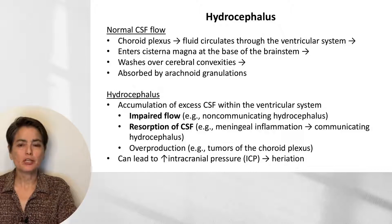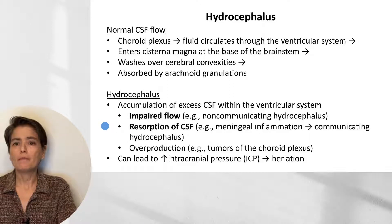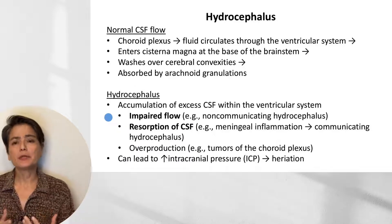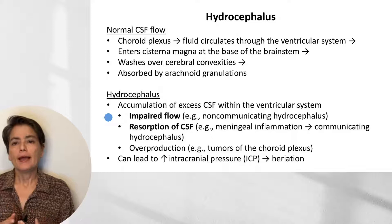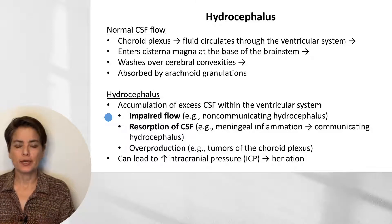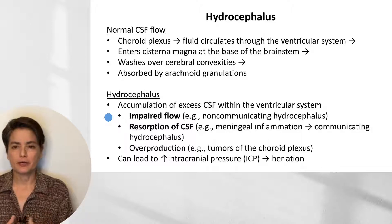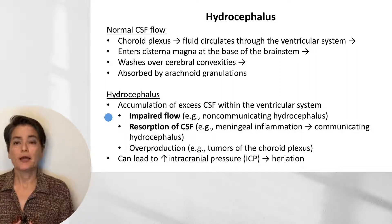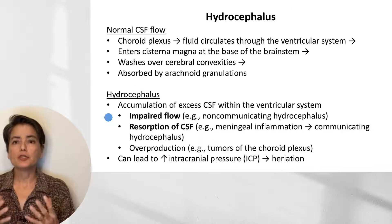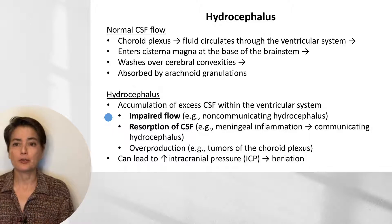In hydrocephalus, we have an accumulation of excess CSF within the ventricular system. The two most common causes are impaired flow or impaired resorption of CSF, and we can also see overproduction. Impaired flow is typically due to some sort of blockage — perhaps by a tumor or scarring due to inflammation — and because there is a block, this is referred to as non-communicating hydrocephalus, with upstream dilation of the ventricular system. When we have impaired resorption, such as with meningeal inflammation, there is no blockage, and so this is referred to as communicating hydrocephalus. Finally, excess CSF due to overproduction typically results from tumors of the choroid plexus, and this can lead to increased intracranial pressure and herniation.